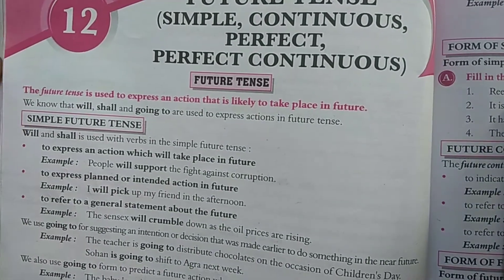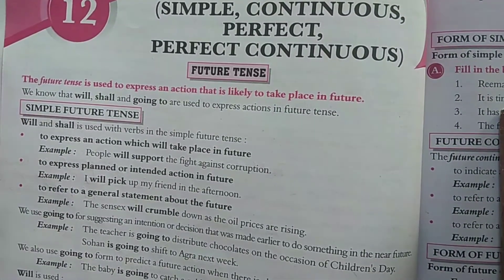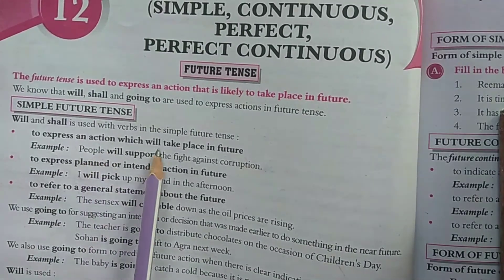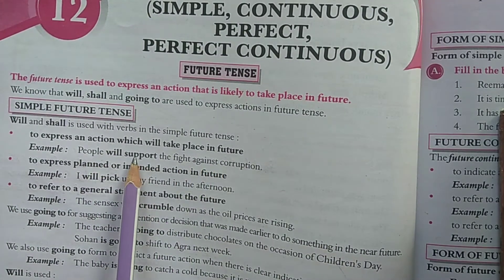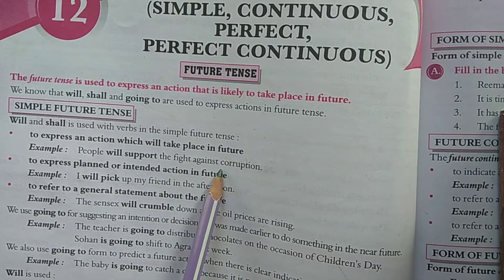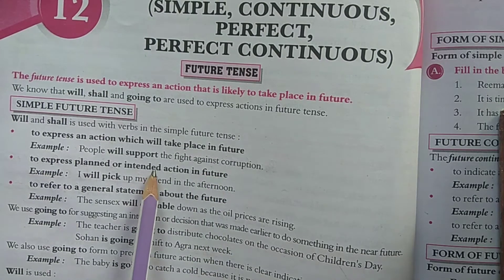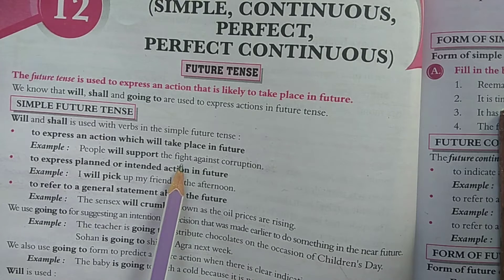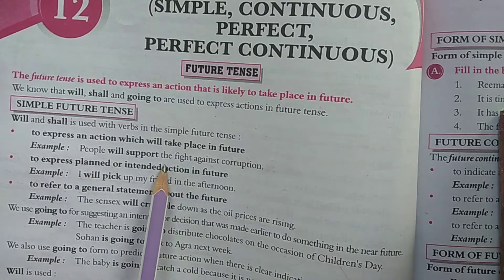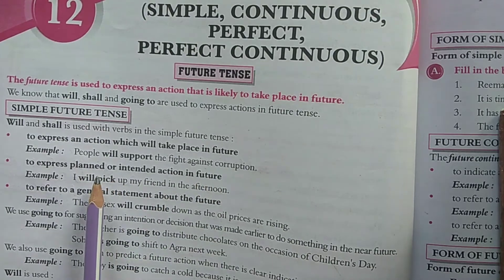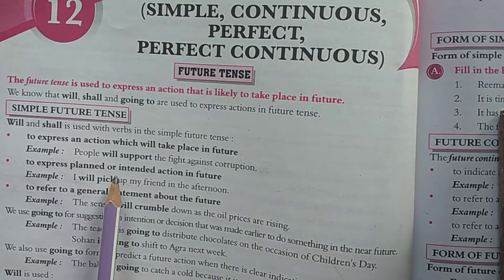There are some examples in your book regarding the simple future tense. The first example is to express an action which will take place in the future: 'People will support the fight against corruption.' This is an action that is going to take place in the future, and we can express it in this kind of sentence.